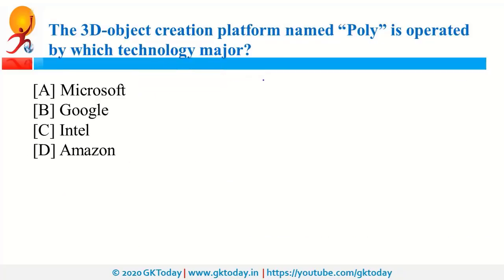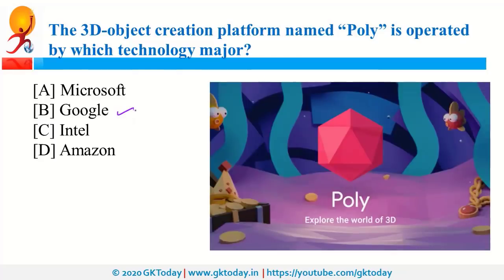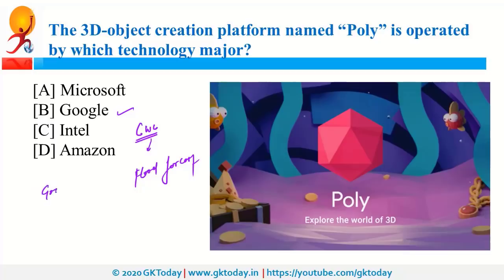The 3D object creation platform named Poly is operated by Google, and recently it was in news because Google has proposed to shut down this platform from next year. Recently, Google also collaborated with CWC — Central Water Commission — for flood forecasting. Google was also in news as it renamed and relaunched Google Plus as Google Currents.